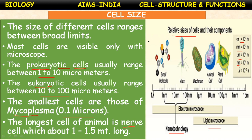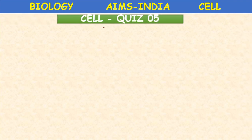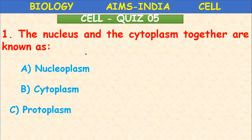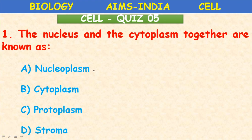As tomorrow — the 28th — there is an exam on this chapter, cell structure and function, let us go through one exercise: Cell Quiz number five. The nucleus and the cytoplasm together are known as — nucleoplasm, cytoplasm, protoplasm, or stroma? The correct answer is protoplasm. Protoplasm equals nucleus plus cytoplasm.